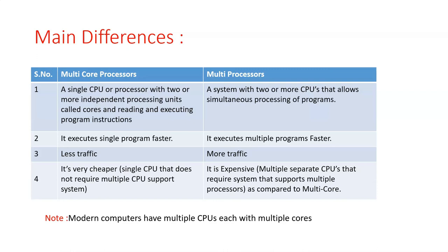Modern computers have multiple CPUs or multiple processors, and each processor with multiple cores, because we want to get all the advantages — parallel processing, concurrent execution, and many other benefits. So it is possible to combine both multi-core processors and multi-processing systems within a single system.